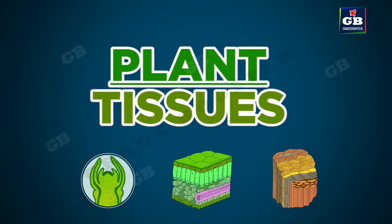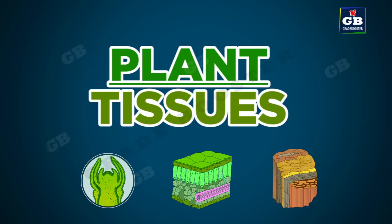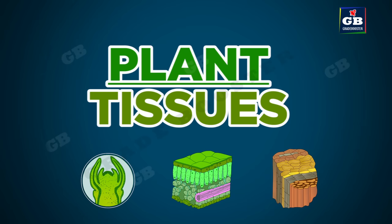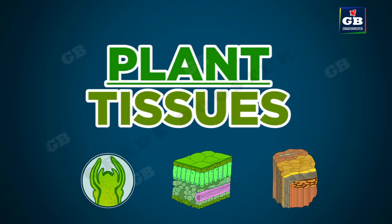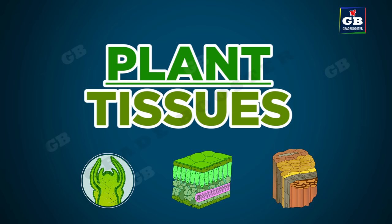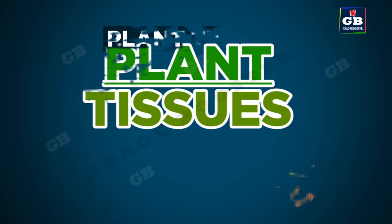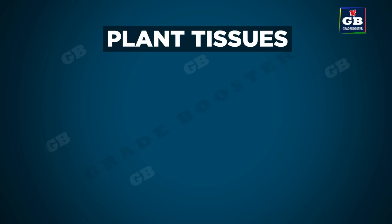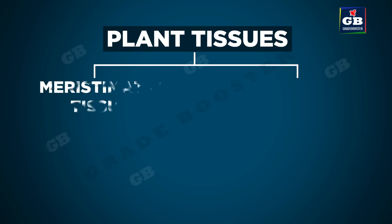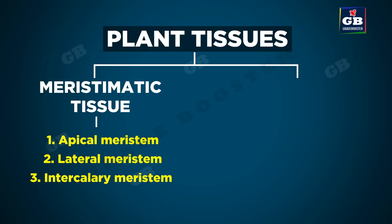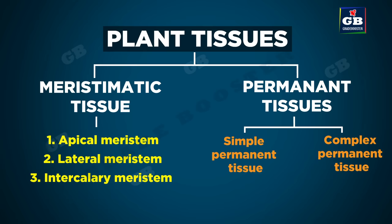Plant tissues. In this video we will learn about plant tissues. Plant tissues are mainly divided into two groups. The first one is meristematic tissue and the second one is permanent tissue.